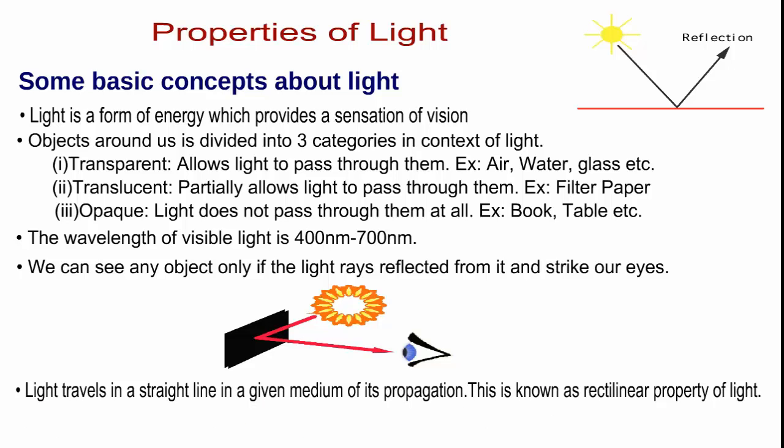Wavelength of visible light is 400 nanometers to 700 nanometers. We can see any objects only if the light rays reflected from it strikes our eyes.